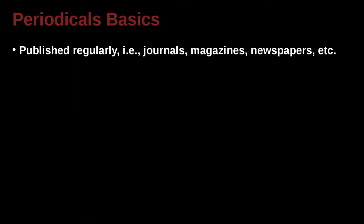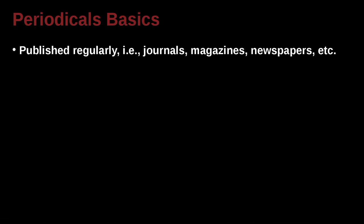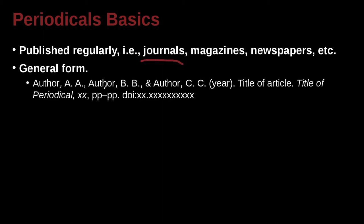Let's start out with some of the basics. We call them periodicals. Periodicals are journals, magazines, newspapers. Of course if you're a researcher, the thing you'll be dealing with most of the time is journals that you'll be citing. So let's take a look at the general form for APA.